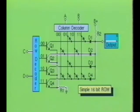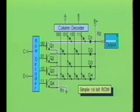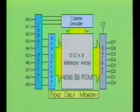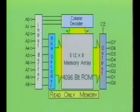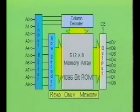Read-only memory devices are available in both TTL and MOS configurations. Here you see a block diagram of a 4096-bit read-only memory device, which is organized in a 512-word by 8-bit memory configuration. Notice that it contains the row and column decoder sections, an address input buffer, an output driver stage, and a 512-word by 8-bit memory section.